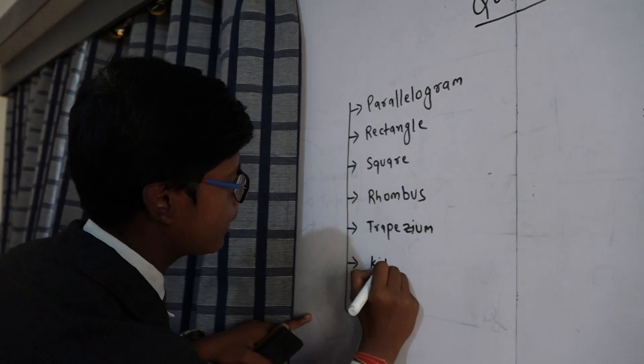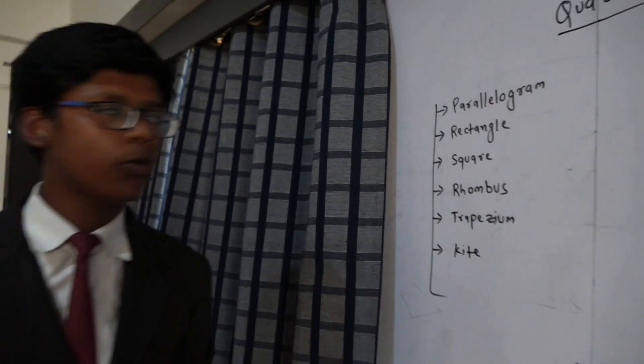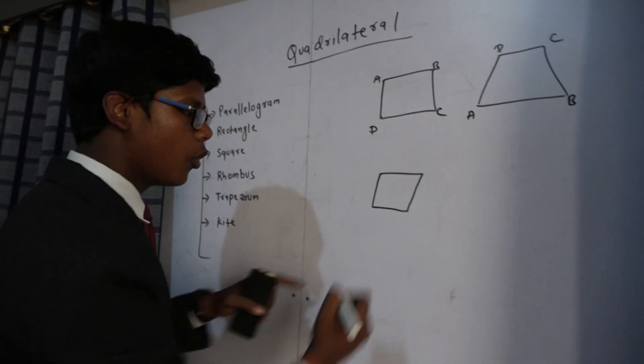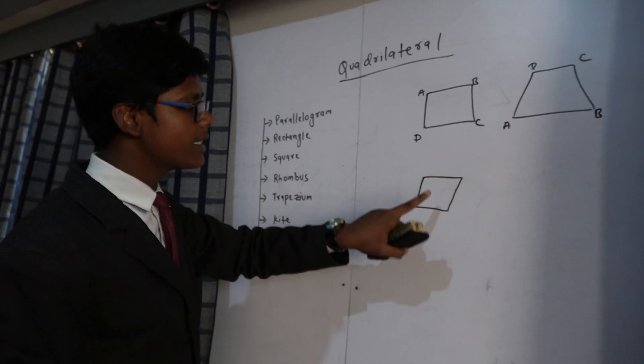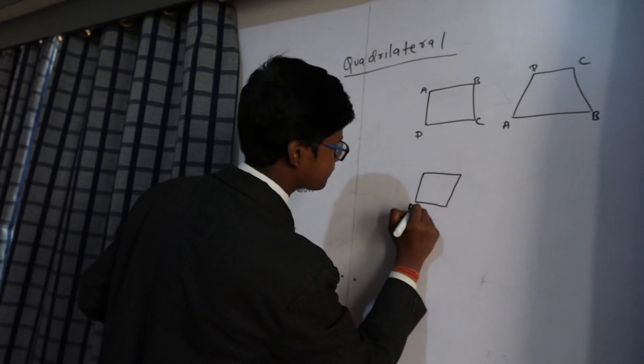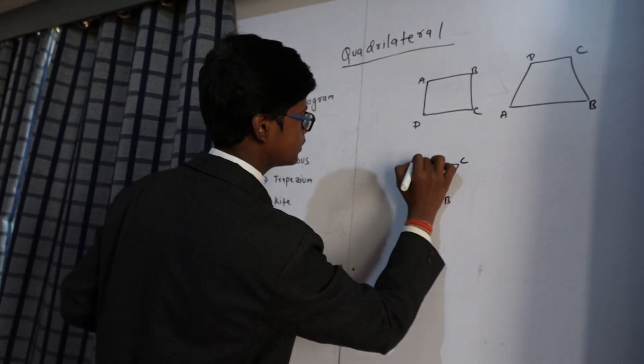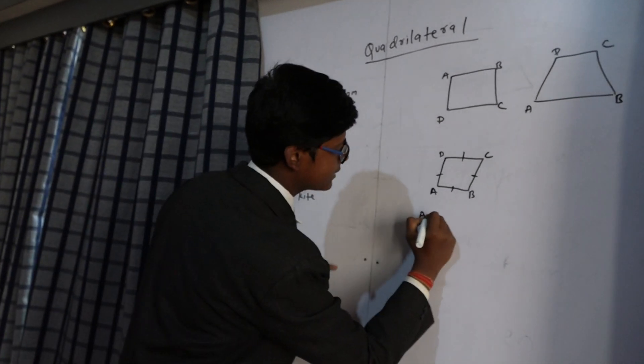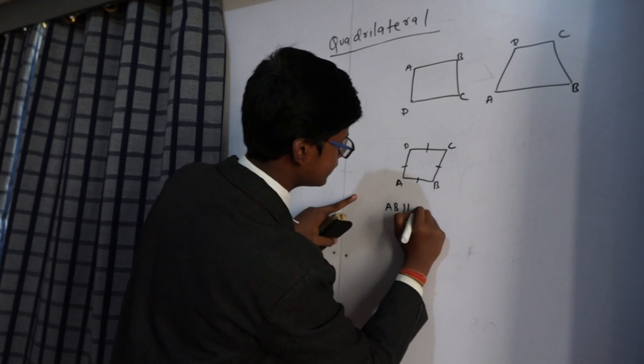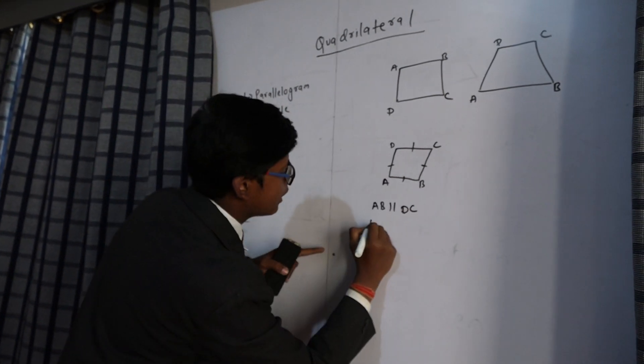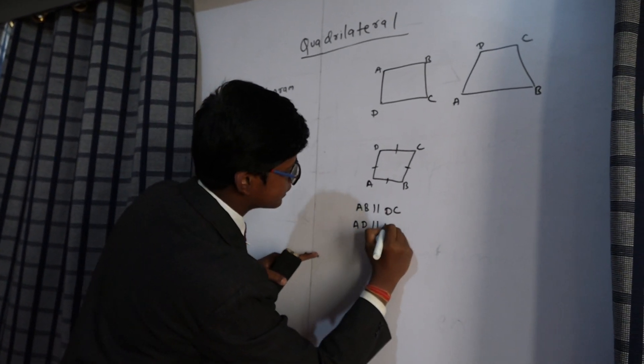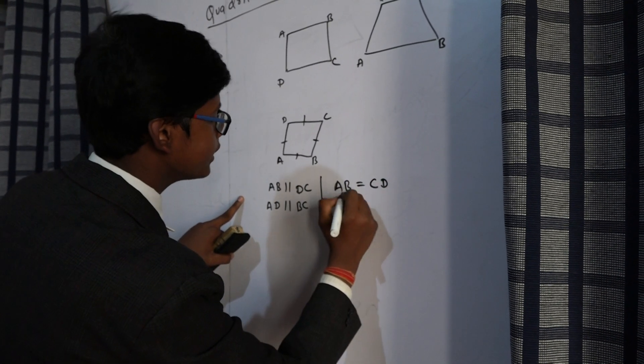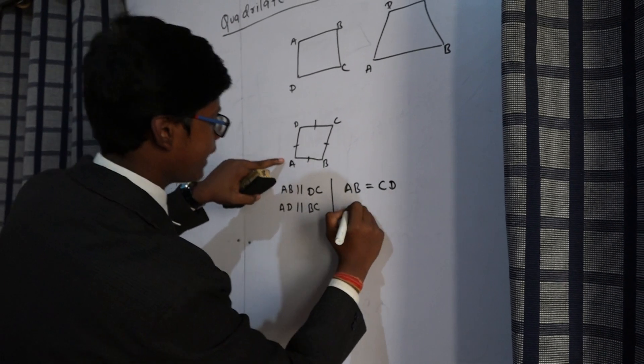Let me explain about parallelograms. A parallelogram is also a four-sided bounded figure having four vertices with equal sides and angles. Its sides AB is parallel to DC, and AD is parallel to BC. It is also equal, so we can write AB equal to CD and AD equal to BC.